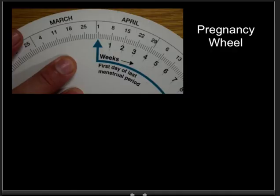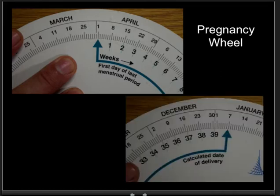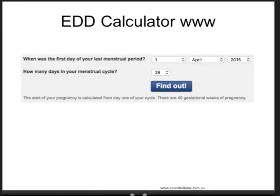The second option is using the pregnancy wheel. Here we see a frequently used wheel in South Australia. I put the arrow on the 1st of April — the first day of the last menstrual period — and when you look at where the other arrow points, it tells you the due date for this example.